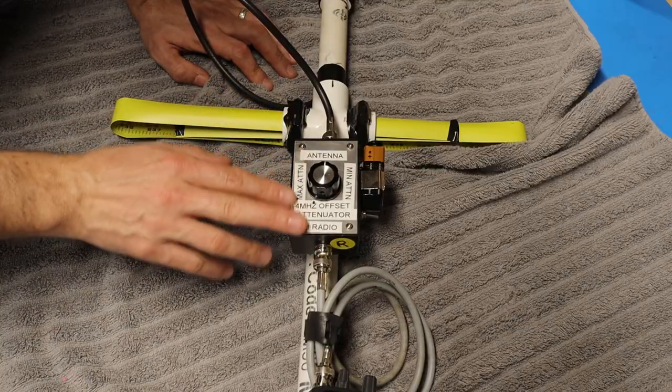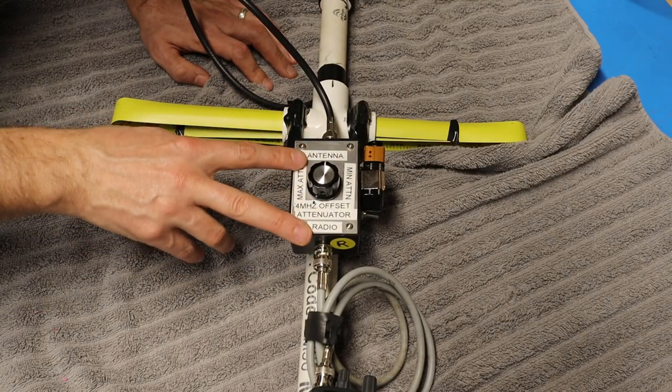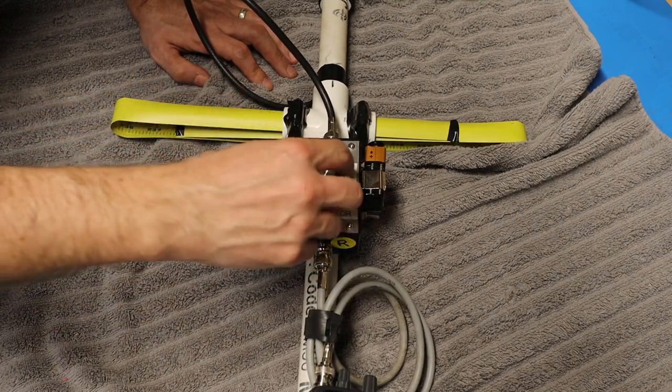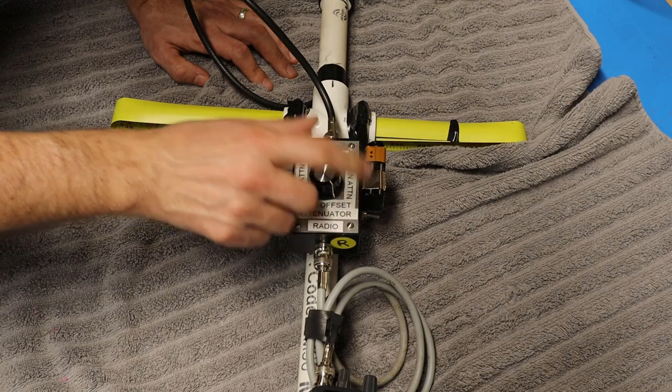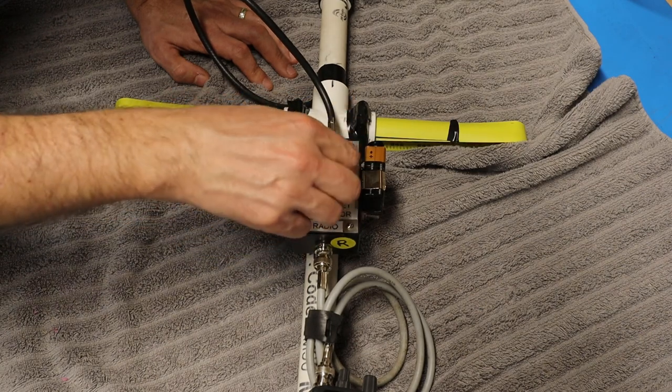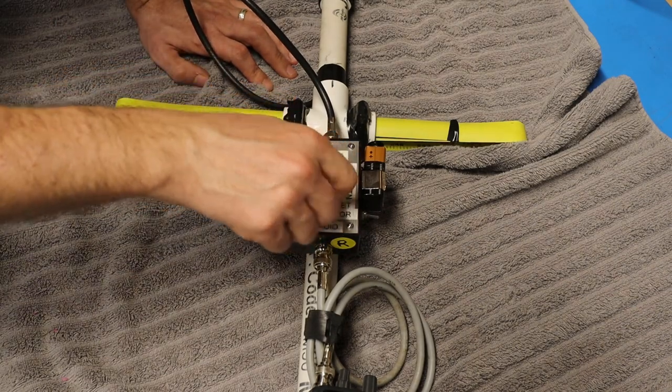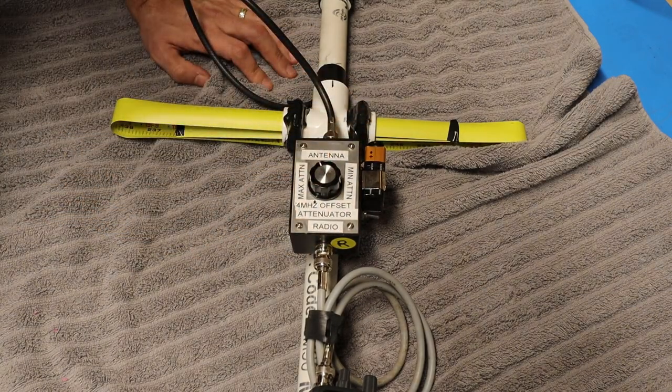And you can see Bill has put quite a bit of labeling on here so he knows what's what. This is the connection to the radio. This is the connection to the antenna. Turning the knob all the way to the right is minimum attenuation and turning it to the left is maximum attenuation. Now let's talk about how this thing works and do a demo.